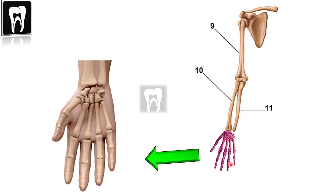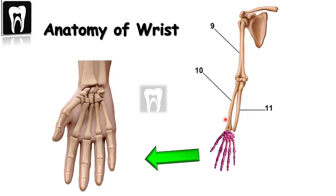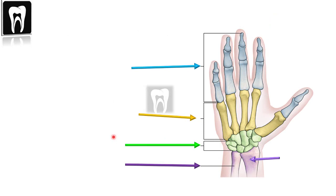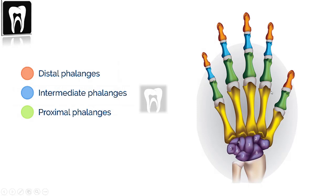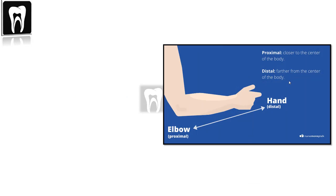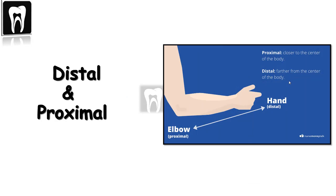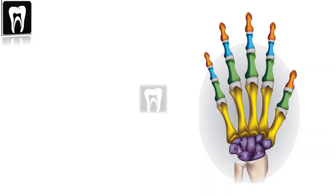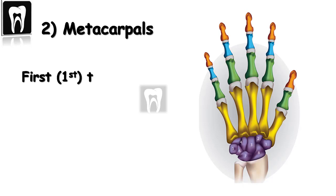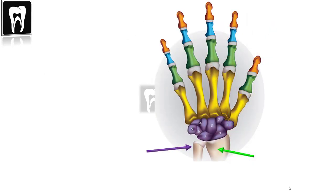Let's look at the schematic skeletal view of the wrist bones. The wrist contains four types of bones. Starting with the phalanges — five phalanges of the fingers. Every finger has three parts: the proximal, intermediate, and distal, except the thumb, which has two parts. Proximal means close to the body and distal means far from the body. Then we have the metacarpal bones, starting from the thumb as the first going toward the little finger as the fifth. The metacarpals contain three parts: the base, the body, and the head. We also have the ulna — the smaller, thinner bone — and the radius, the thicker, larger bone.